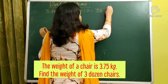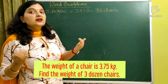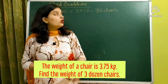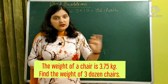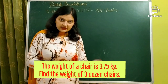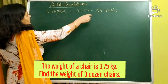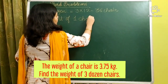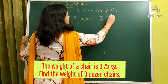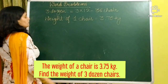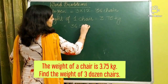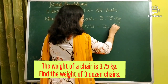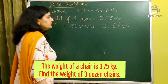So three dozen is equal to 36 chairs. The question is now clear: the weight of one chair is 3.75 kg and you have to find the weight of 36 chairs. We have already converted three dozen into 36 chairs. Weight of one chair is 3.75 kg, so for 36 chairs we multiply 3.75 by 36 and after solving we will get our answer.